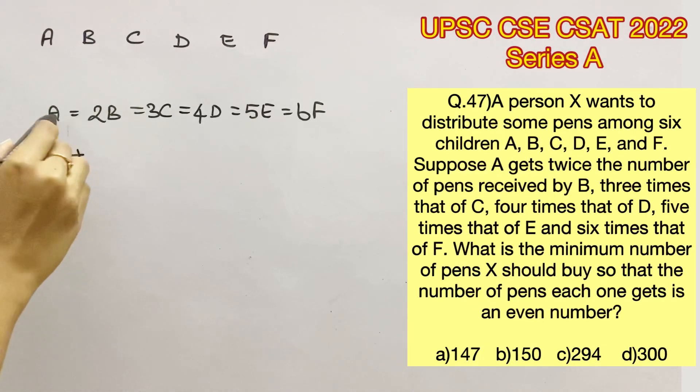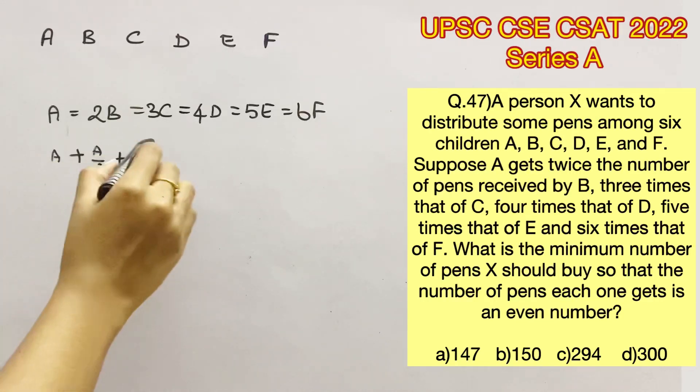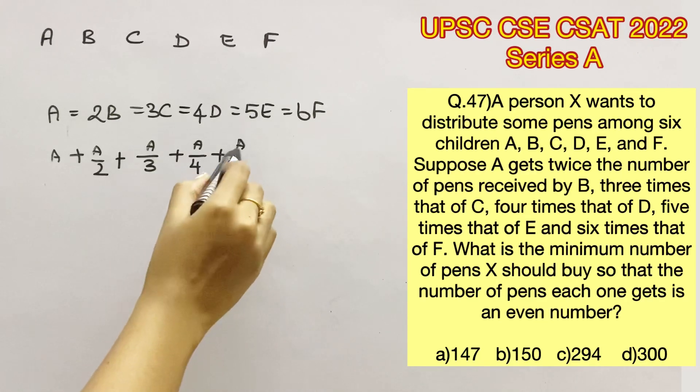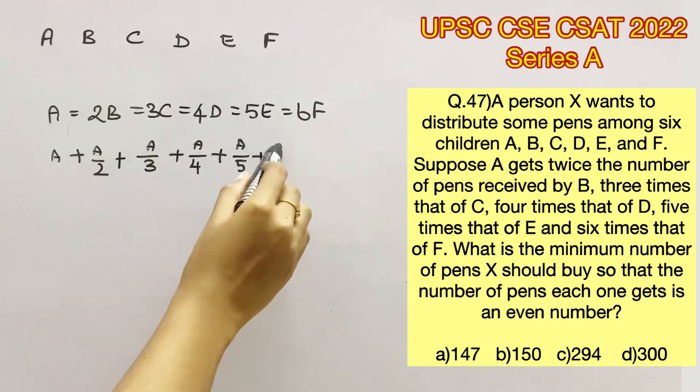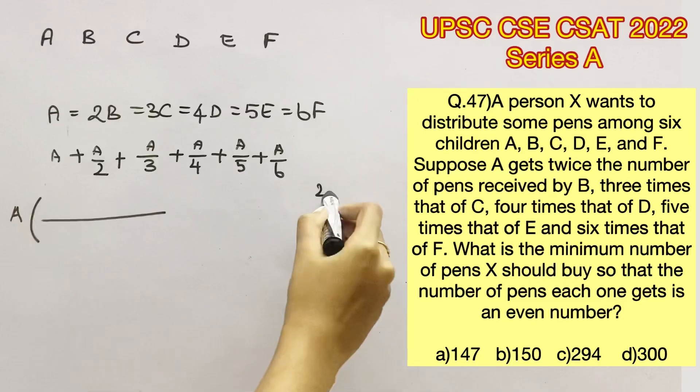we are going to substitute everything in terms of A. So A will have A number of pens, B will have A by 2 number of pens because A is equal to 2B, C will have A by 3 number of pens, D will have A by 4, E will have A by 5 and F will have A by 6 pens. So if we add all these, we will get the total number of pens that X has distributed. Let's take A outside since it's common in all the terms.